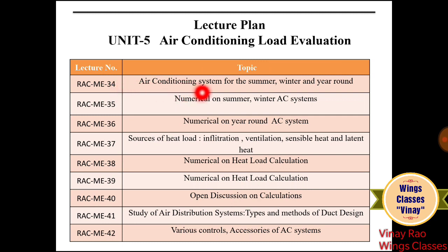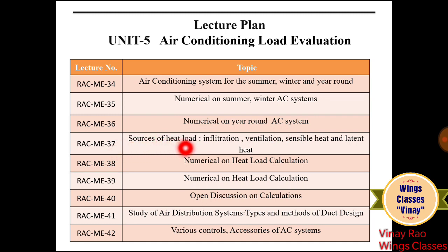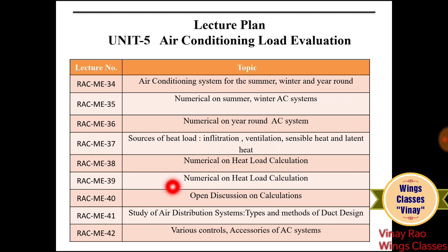Lecture 34 covers Air Conditioning Systems for Summer, Winter, and Year-Round operation. Lecture 35 covers numericals on Summer and Winter Air Conditioning Systems — conceptual numericals based on Unit 4. Lecture 36 covers numericals on Year-Round AC Systems. Lecture 37 covers sources of heat load — infiltration, ventilation, sensible heat, and latent heat. Lectures 38 and 39 cover numericals on heat load calculation, as these are the most important and conceptual problems requiring solution on psychrometric charts, needing 2 to 3 lectures.